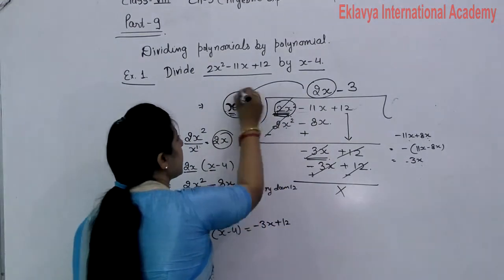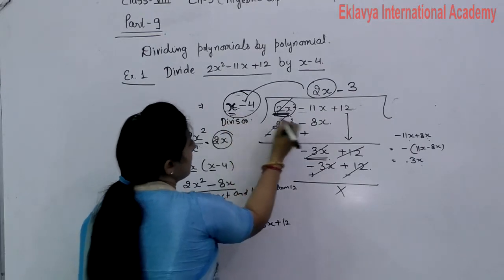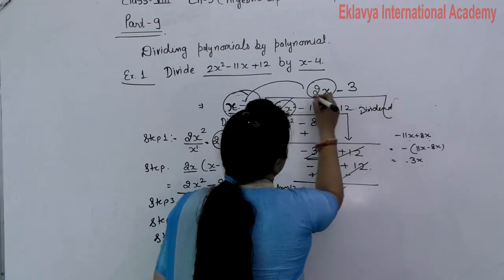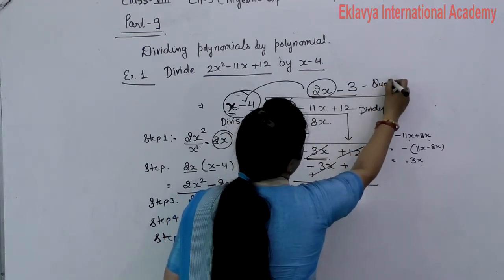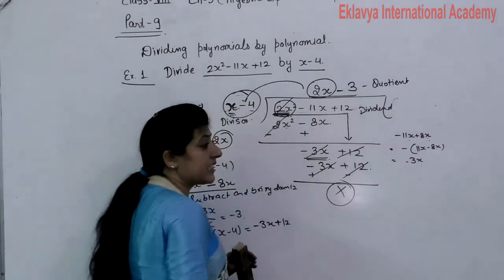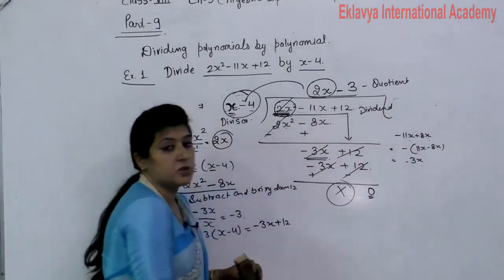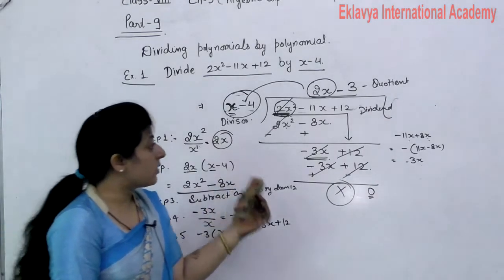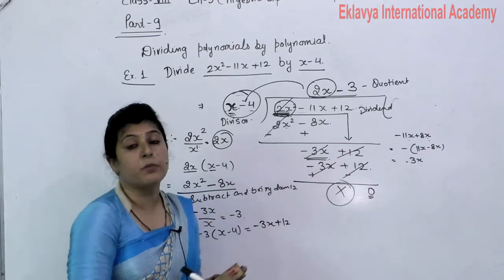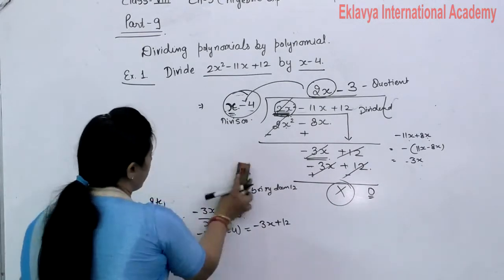This is completely divisible. The dividend is 2x squared minus 11x plus 12, the quotient is 2x minus 3, and the remainder is equal to zero. This is how we divide a polynomial by a polynomial. We will take more examples for further understanding.